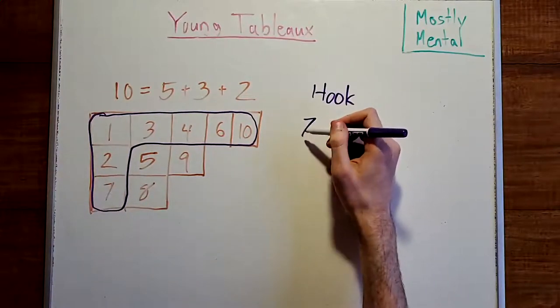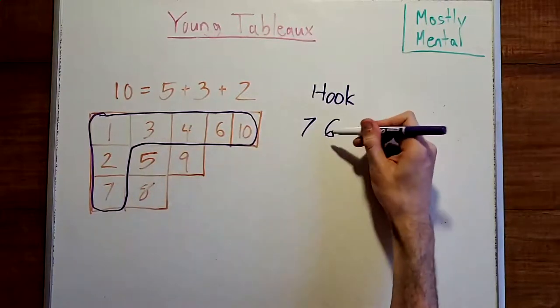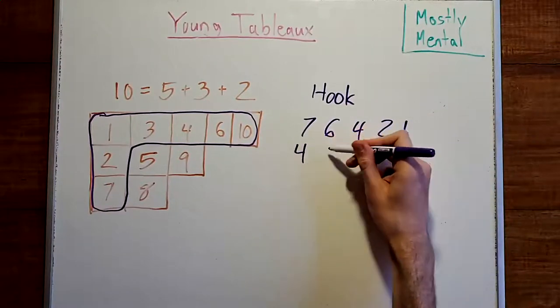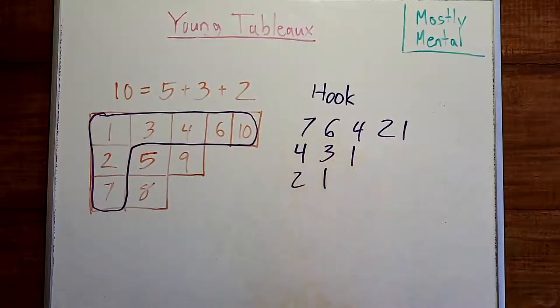And computing the hooks for each of the boxes, we get 6, then 4, 2, 1, 4, 3, 1, 2, and 1. Okay, so what do these hooks give us?